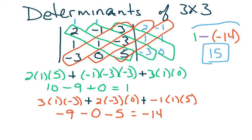Numbers in a diagonal, you multiply. Diagonals going the same way, you add. Do the same thing to the other side. Take your two totals and subtract.